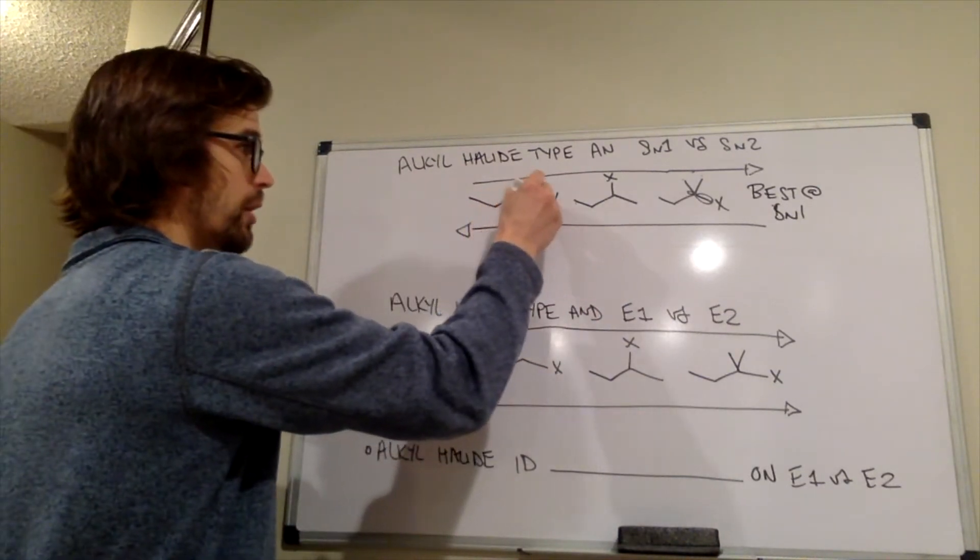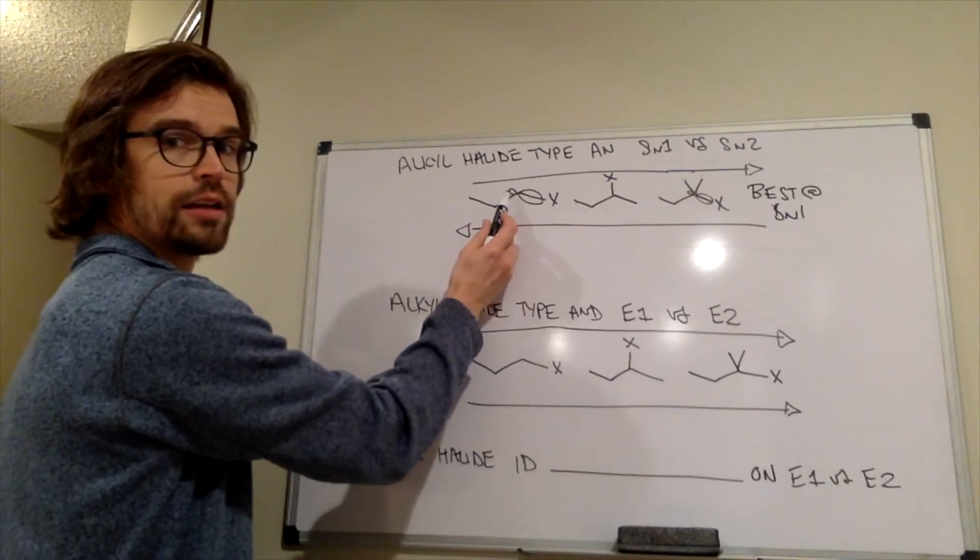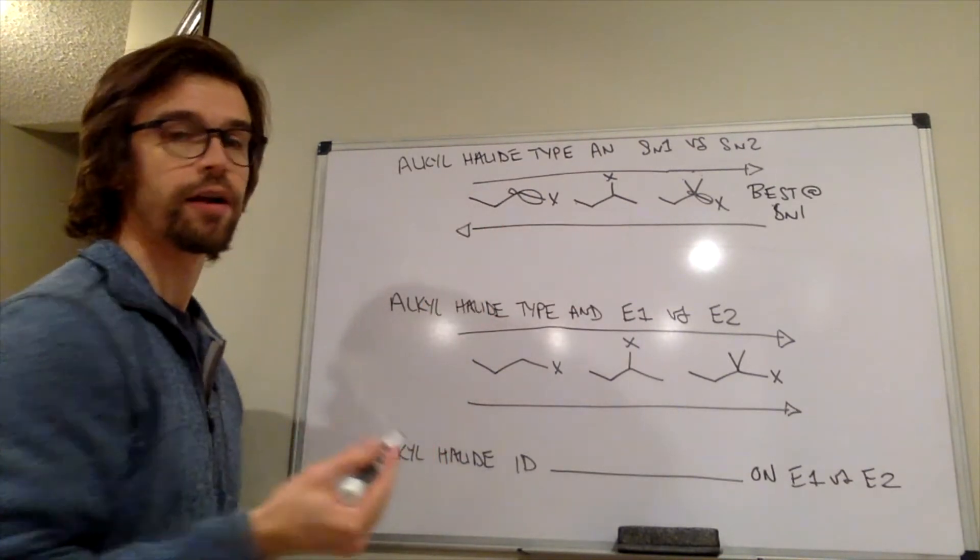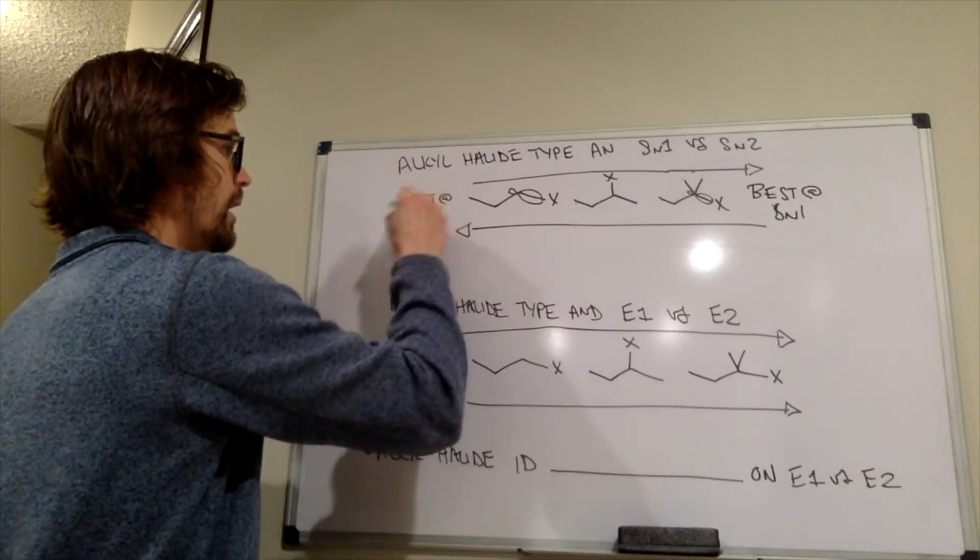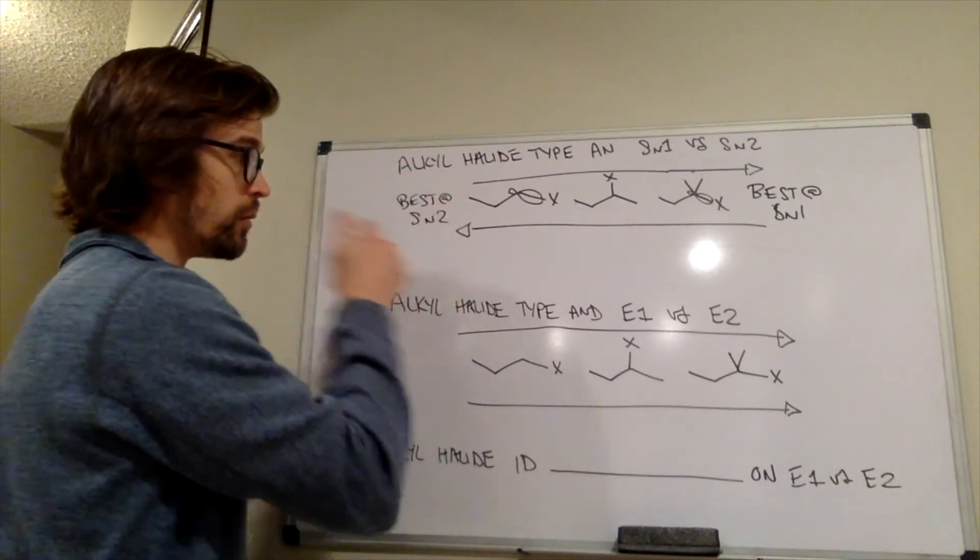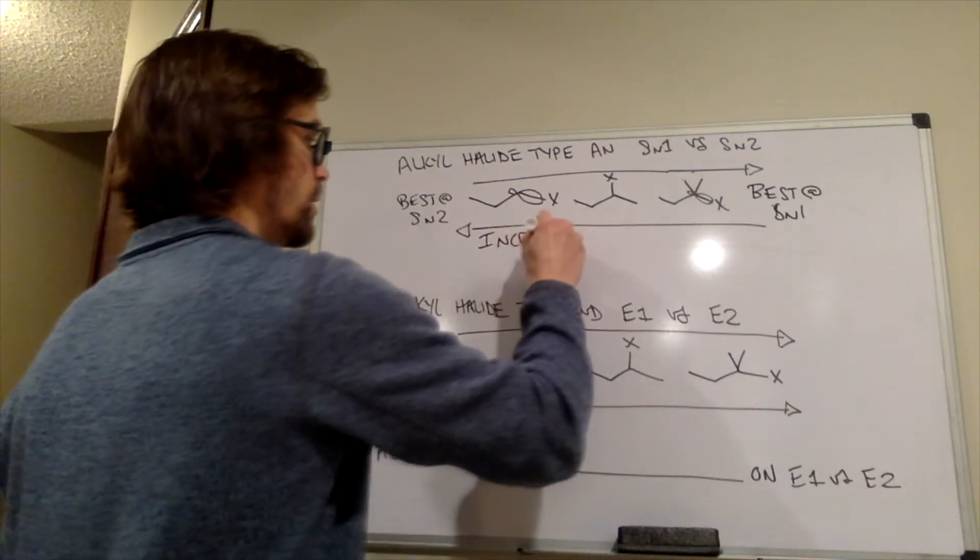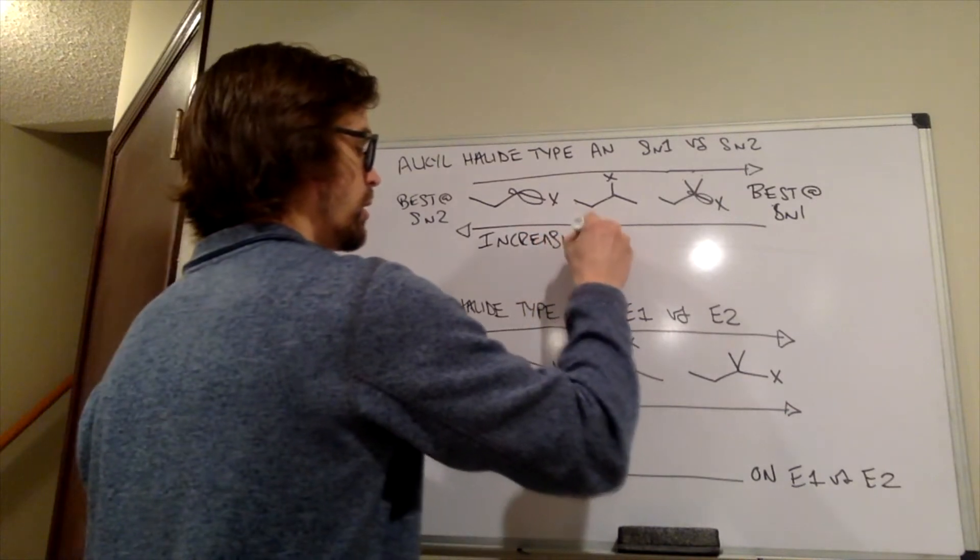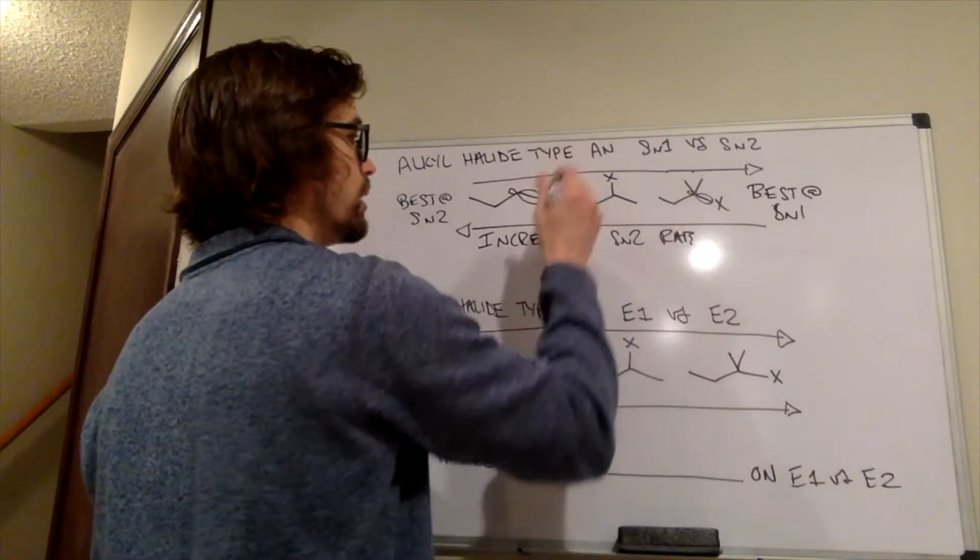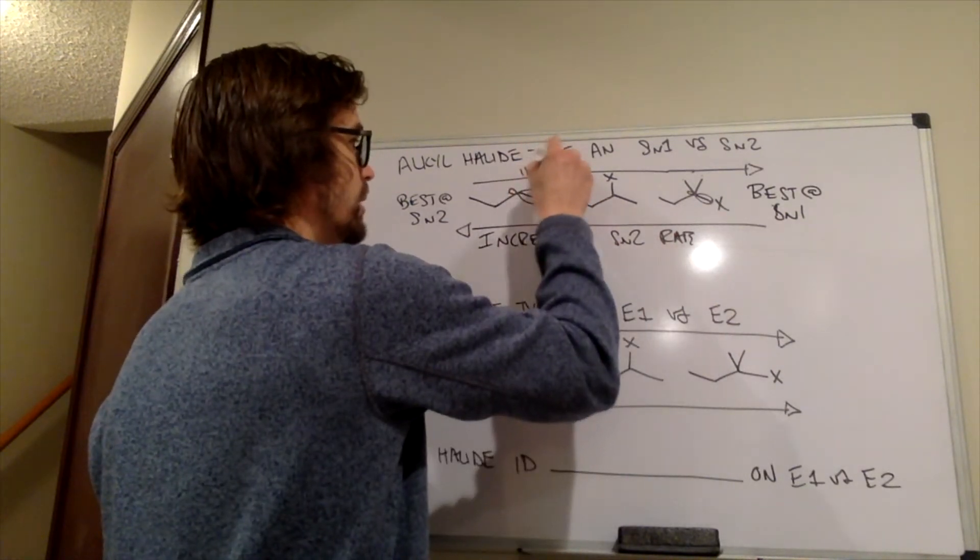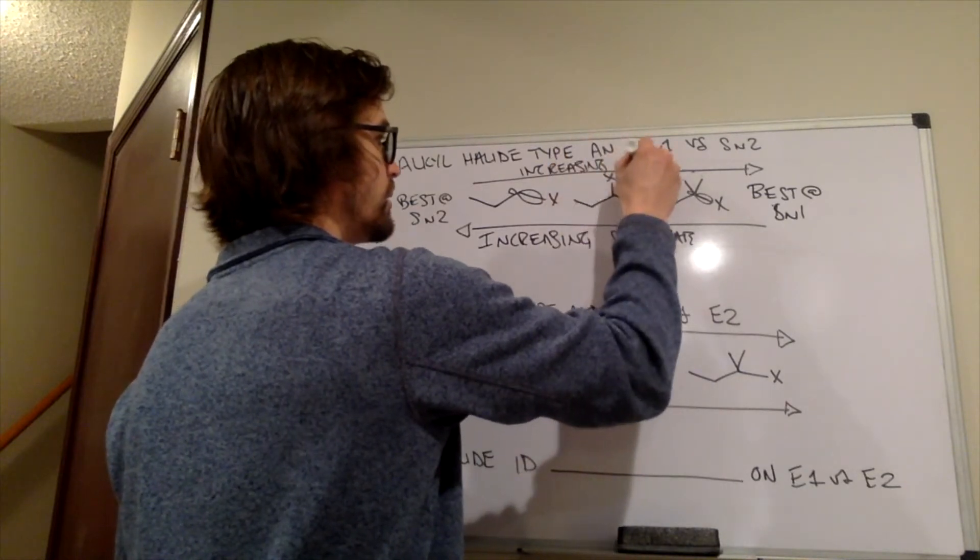This side, this is a primary alkyl halide, there's quite a bit of accessibility to that sigma star, that anti-bonding orbital right there. So this side is going to be best at SN2. So this arrow going this way is increasing SN2 rate, and this arrow going that direction has increasing SN1 rate.